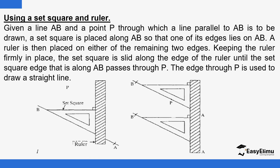Now for the alternative method: you can use a ruler and a set square. Given line AB and a point P through which a line parallel to AB is to be drawn, a set square is placed along the line AB so that one of its edges lies on AB. A ruler is then placed along one of the remaining two edges of the set square.